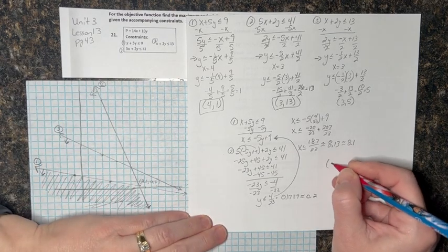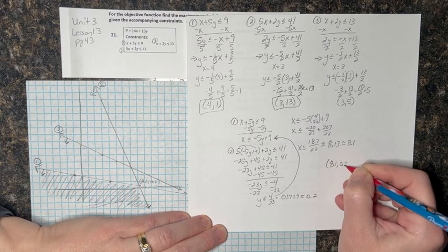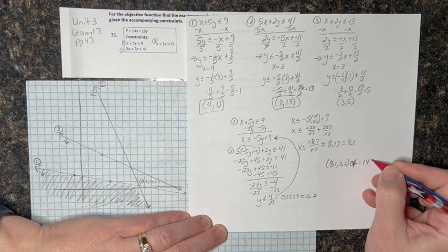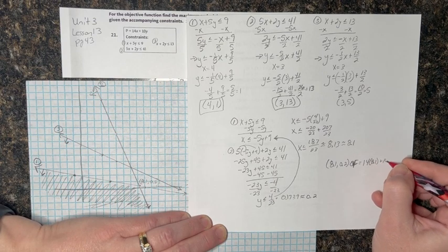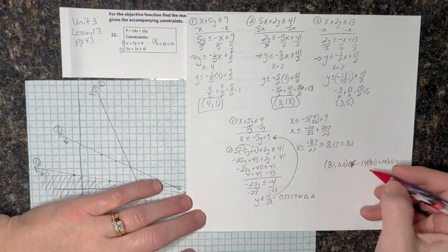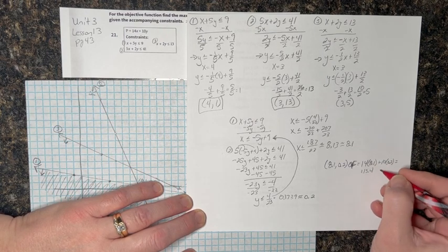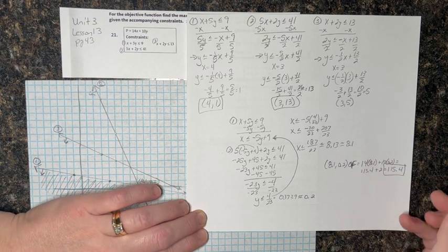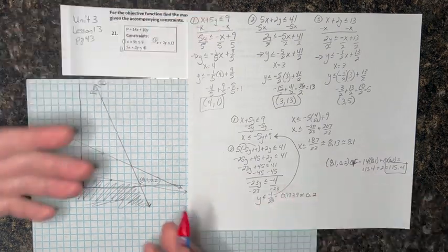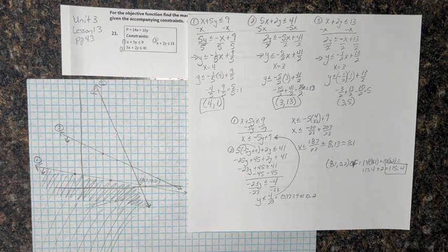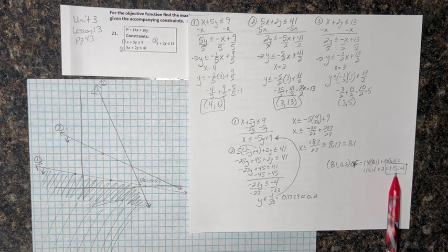Plugging (8.1, 0.2) into our operative function: 14 times 8.1 plus 10 times 0.2 equals 113.4 plus 2, which is 115.4. That is the maximum. There is no minimum, because if you look at the graph, the shading goes on and on forever. So in this case, we just have a maximum, and that maximum is 115.4.